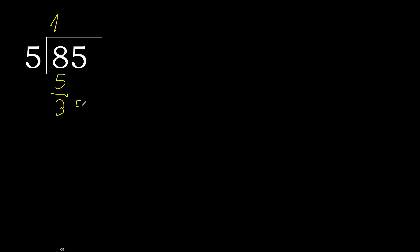Next: 35. 5 multiplied by 8 is 40 — is greater. 5 multiplied by 7 is 35 — not greater. 35 minus 35 is 0. Therefore finish, because there is no remainder.